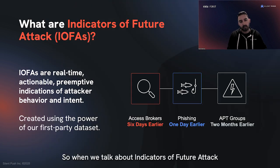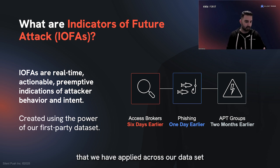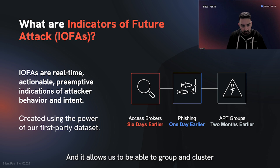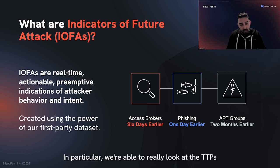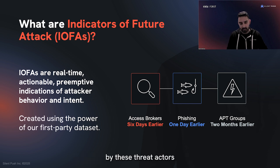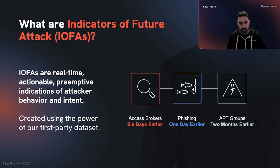When we talk about indicators of future attack, these are hunting rules that we have applied across our data set — across the passive DNS data set we collect and the scan data we collect — allowing us to group and cluster threat actor activity extraordinarily quickly. In particular, we're able to look at the TTPs of infrastructure creation and management by these threat actors and campaigns in order to get a preemptive understanding of what that infrastructure looks like before it can cause harm.